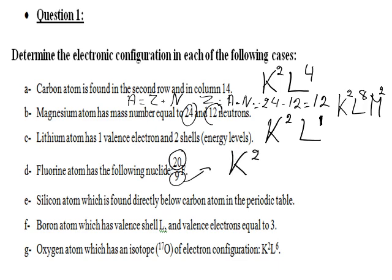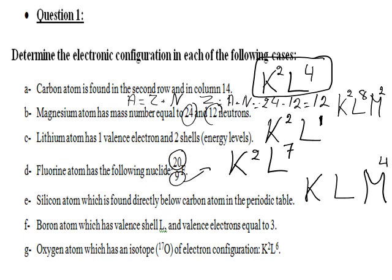An atom with valence shell L and three valence electrons has configuration K2 L3 — K must be filled first with two electrons. Oxygen atom with isotope O-17 has electron configuration K2 L6. Isotopes have the same atomic number Z but different mass numbers, so the electron configuration remains K2 L6.